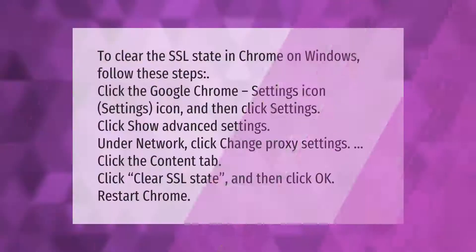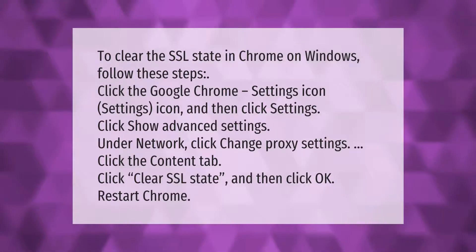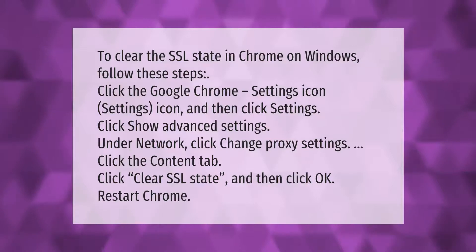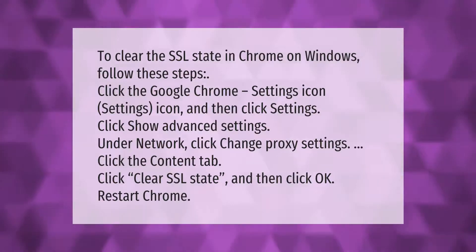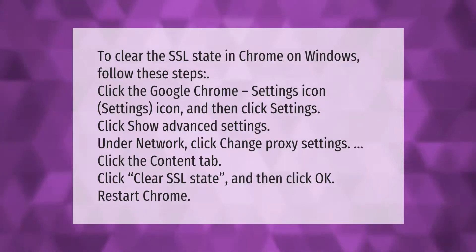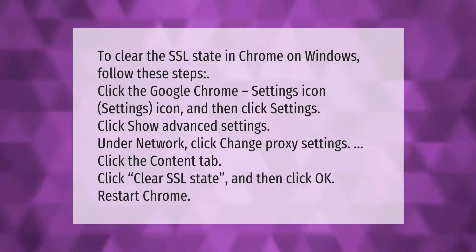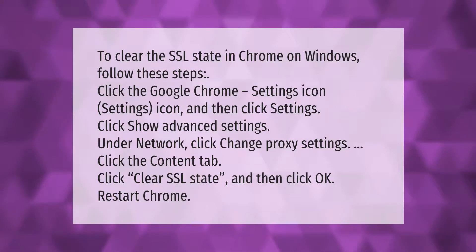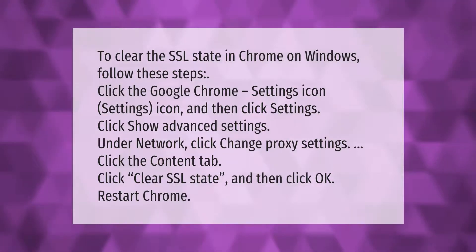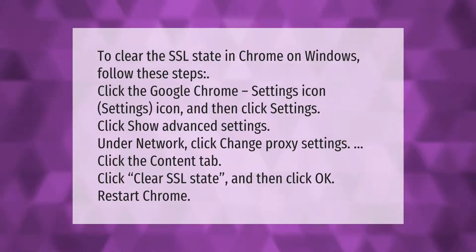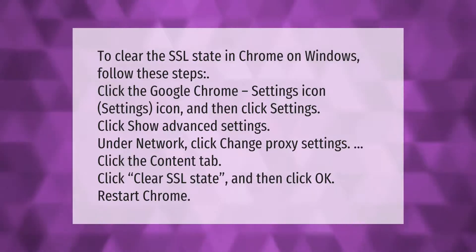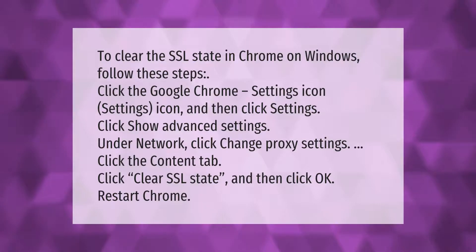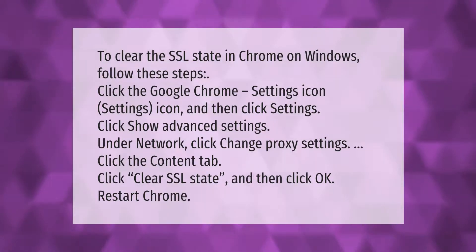To clear the SSL state in Chrome on Windows, follow these steps: click the Google Chrome Settings icon and then click Settings. Click Show Advanced Settings. Under Network, click Change Proxy Settings. Click the Content tab, click Clear SSL State, and then click OK. Restart Chrome.